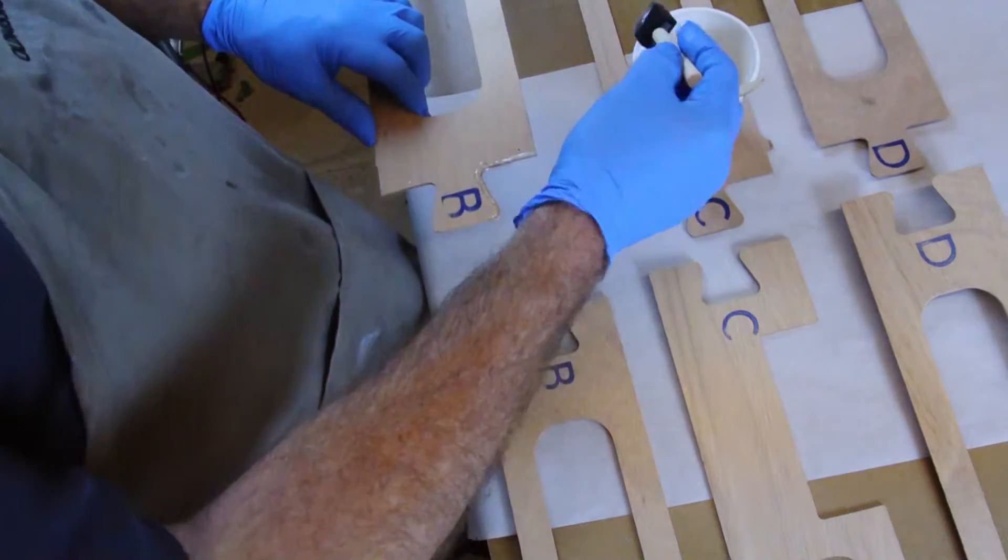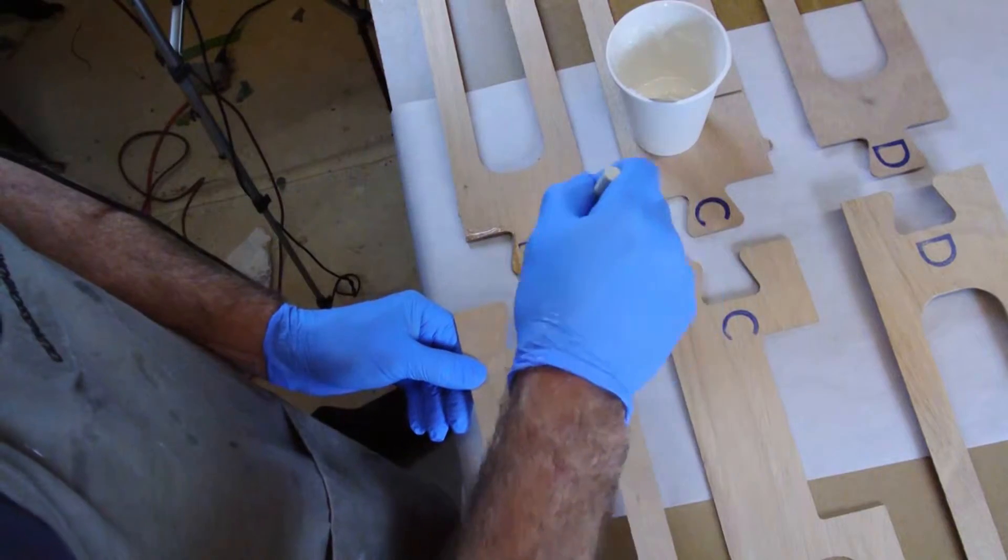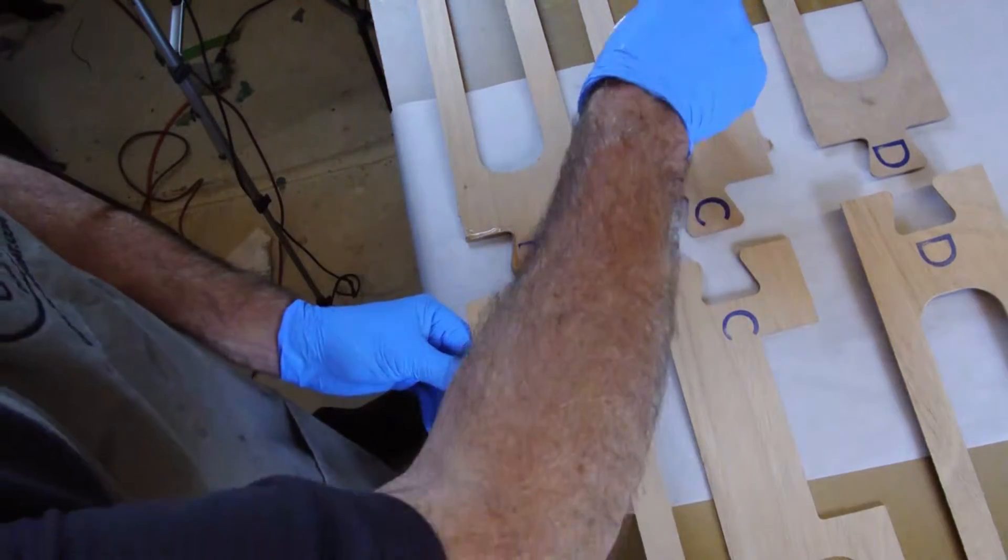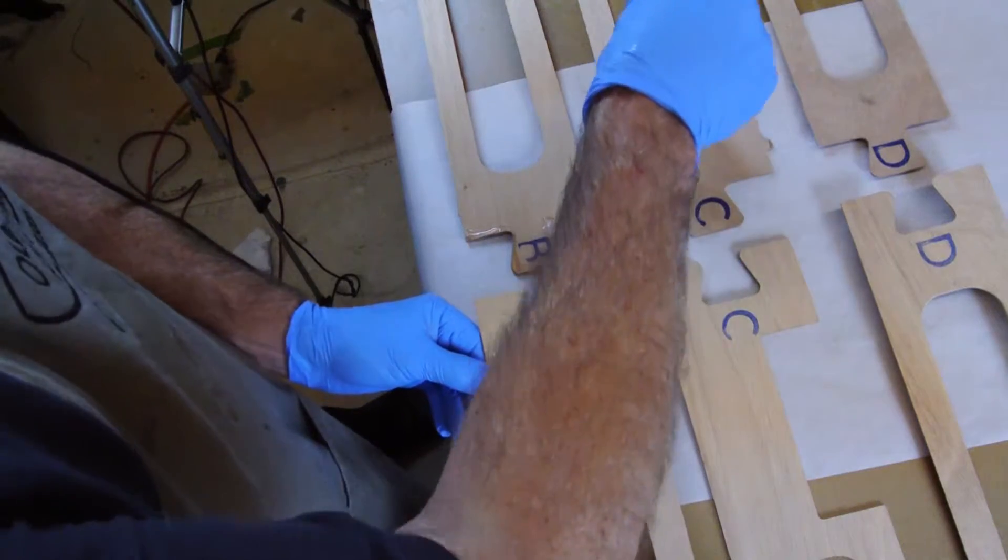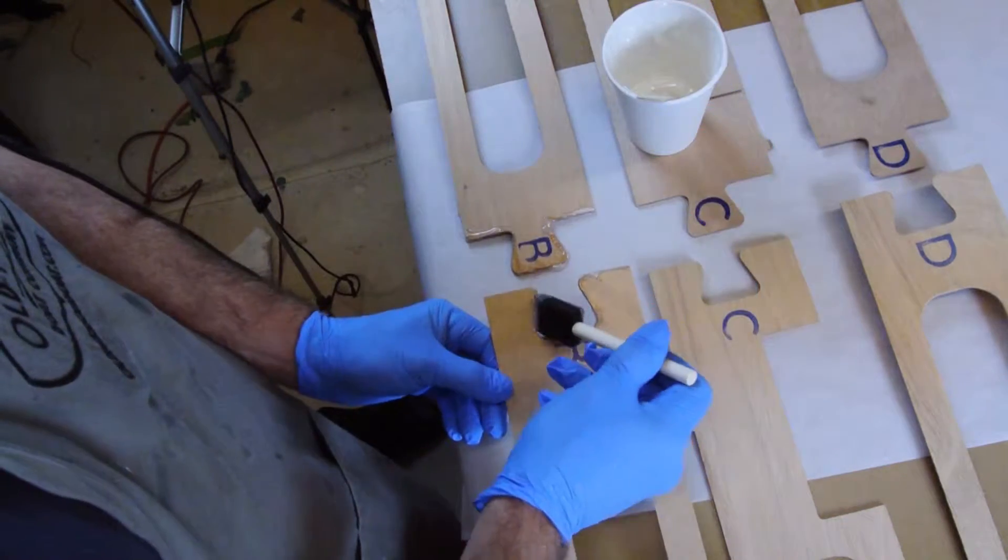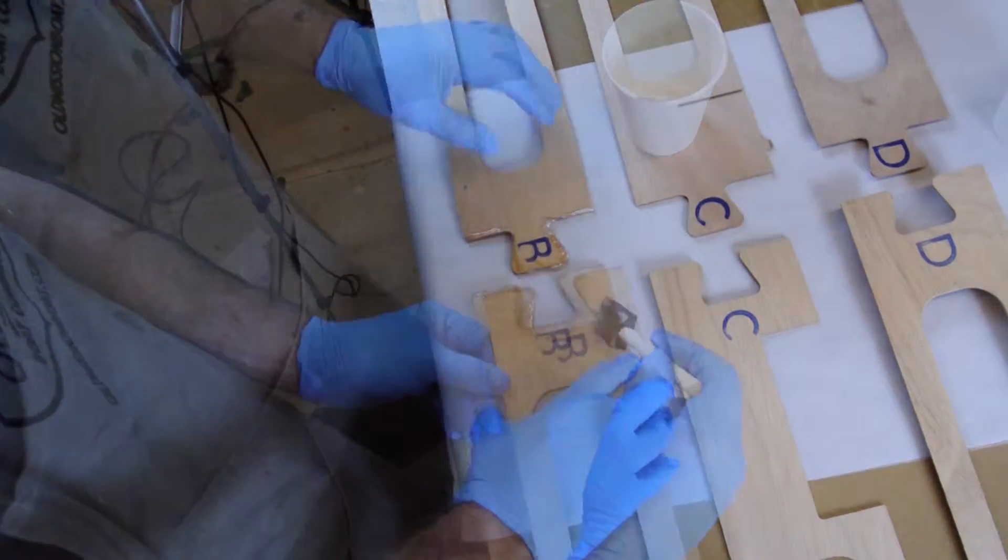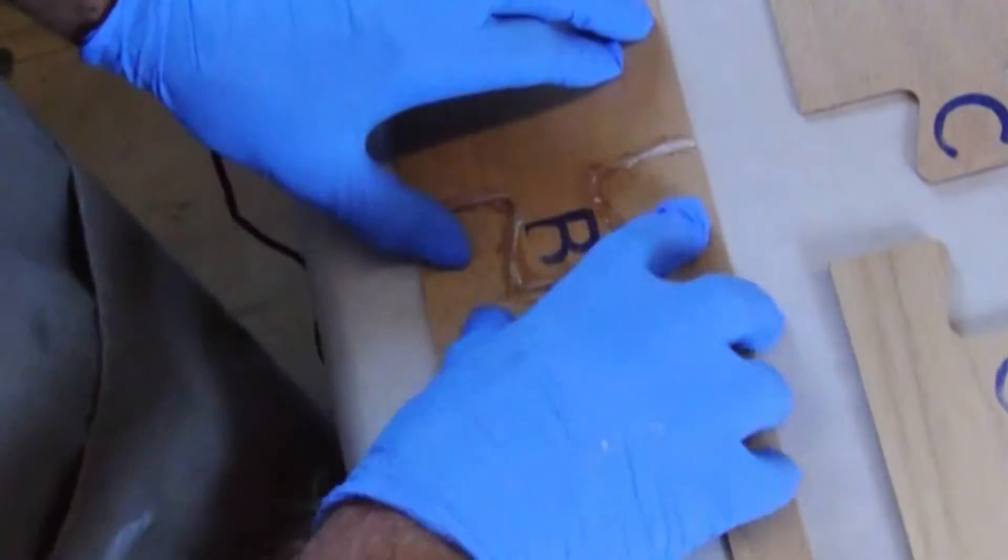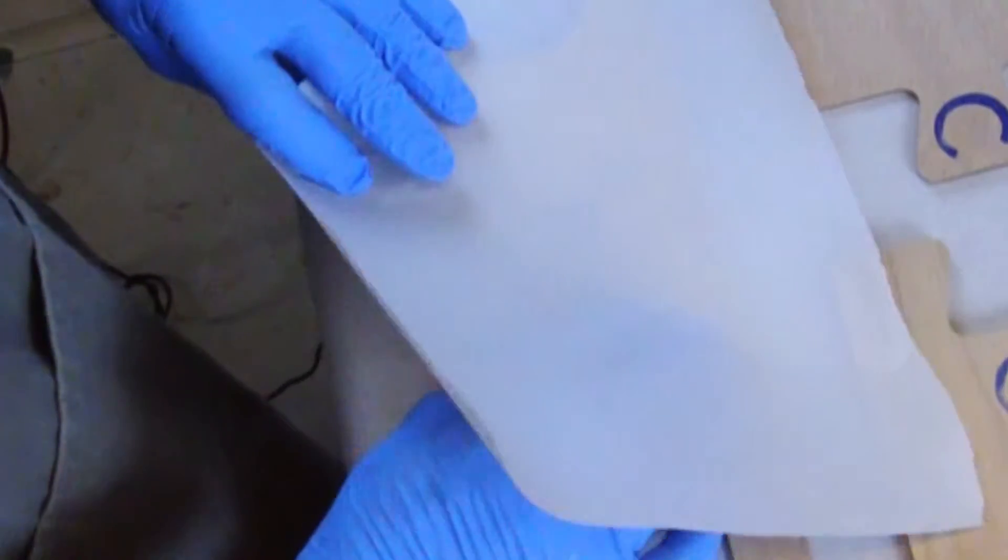Mix up a single batch of slightly thickened epoxy then use a foam brush to apply a layer of epoxy to the inside edges of the scarf joint. You can review our epoxy basics video for more information on mixing epoxy. Align the two pieces and press them together or use a mallet and a small wood block to tap them together if needed.